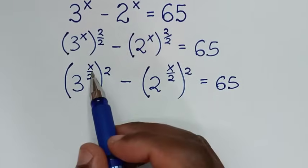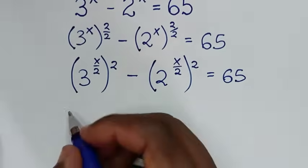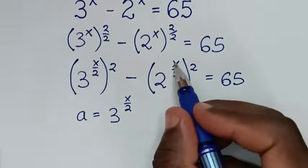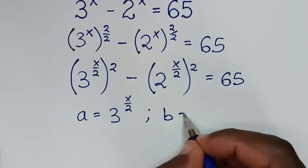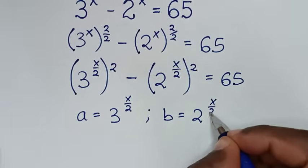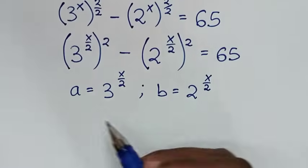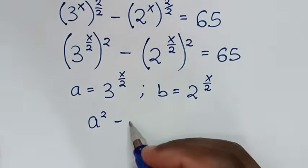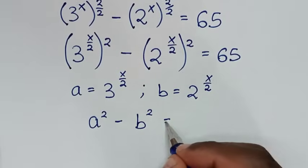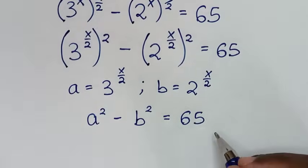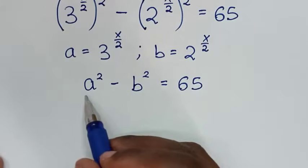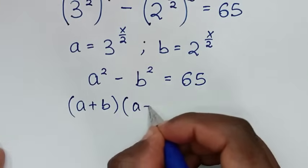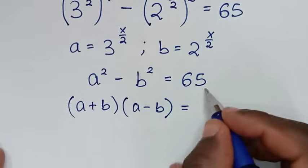From here, we let 3 power of x over 2 equal to a, and 2 power of x over 2 equal to b. Then the equation becomes a squared minus b squared, equal to 65.